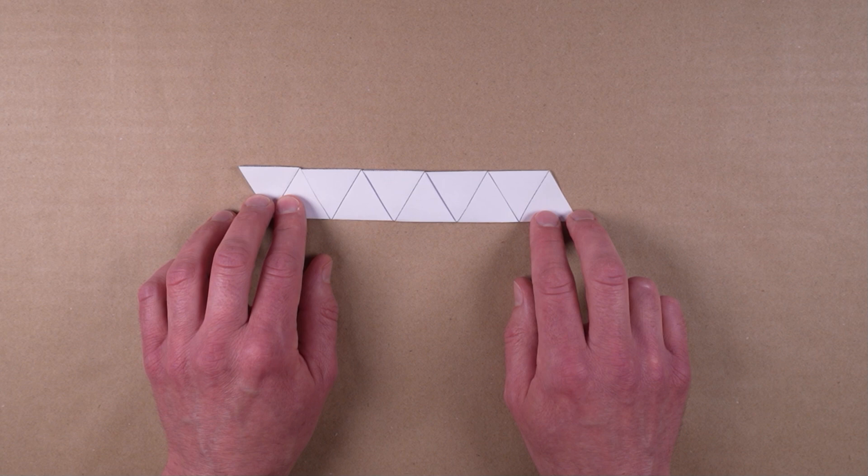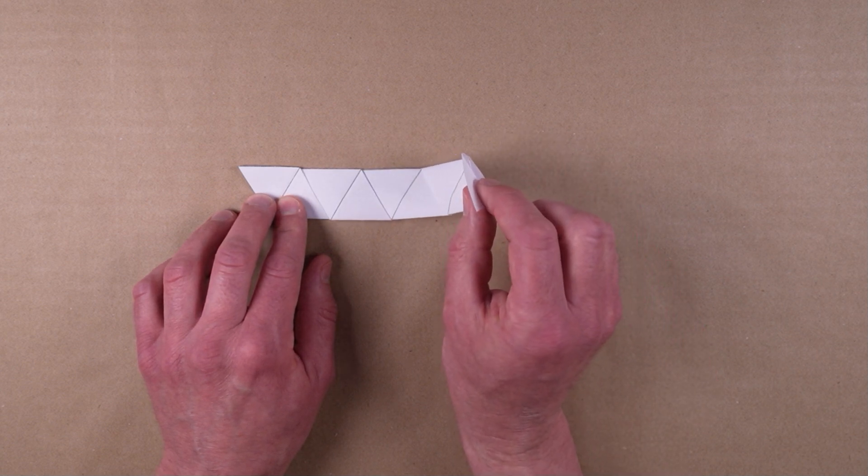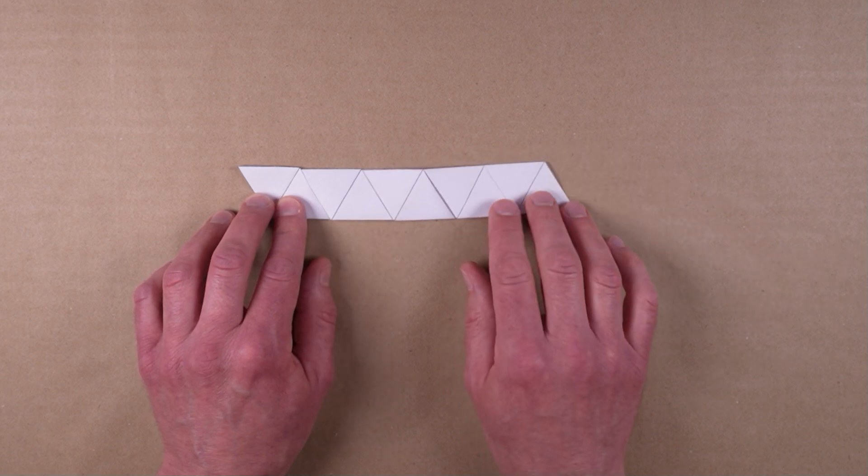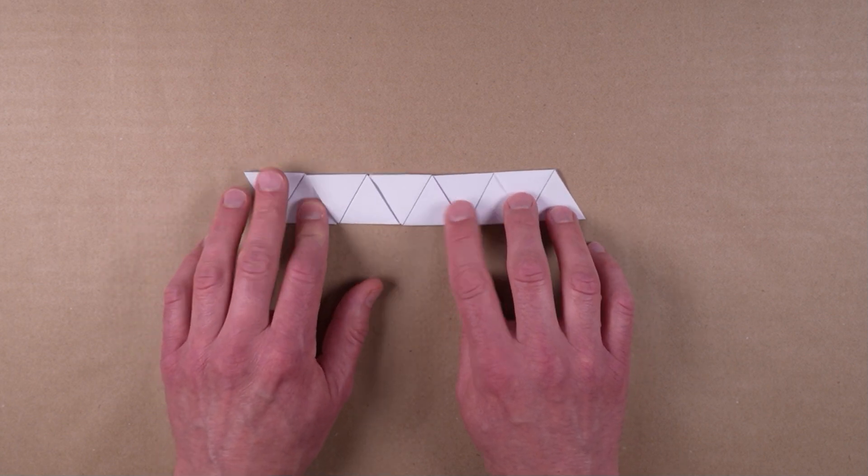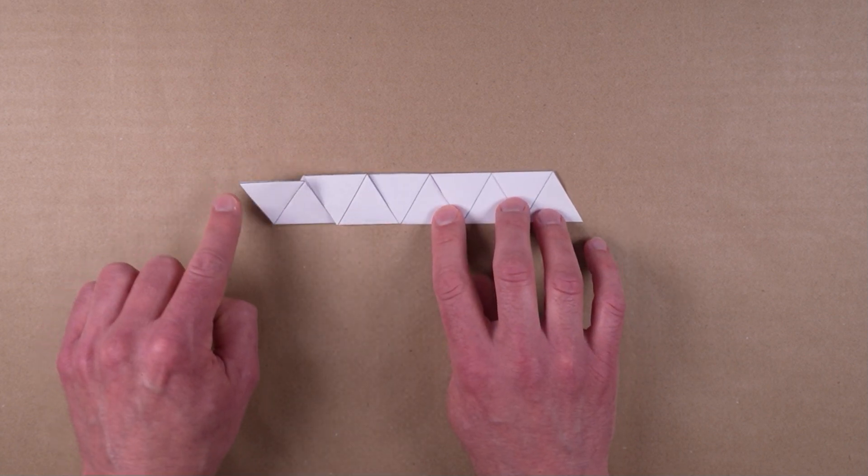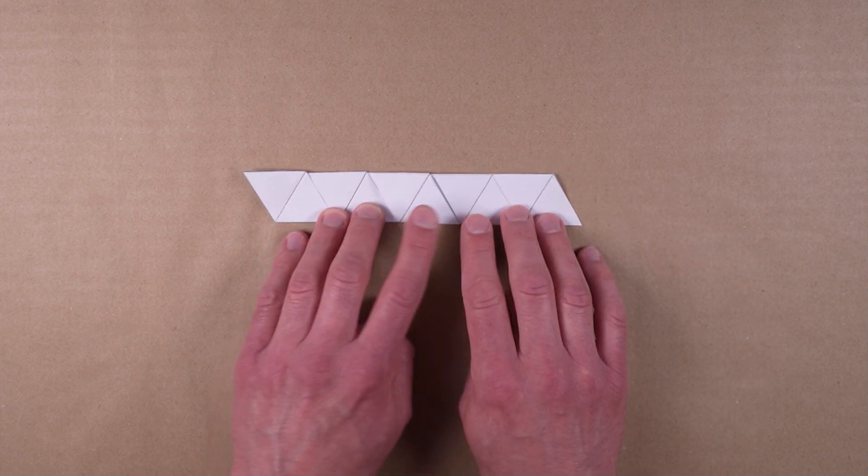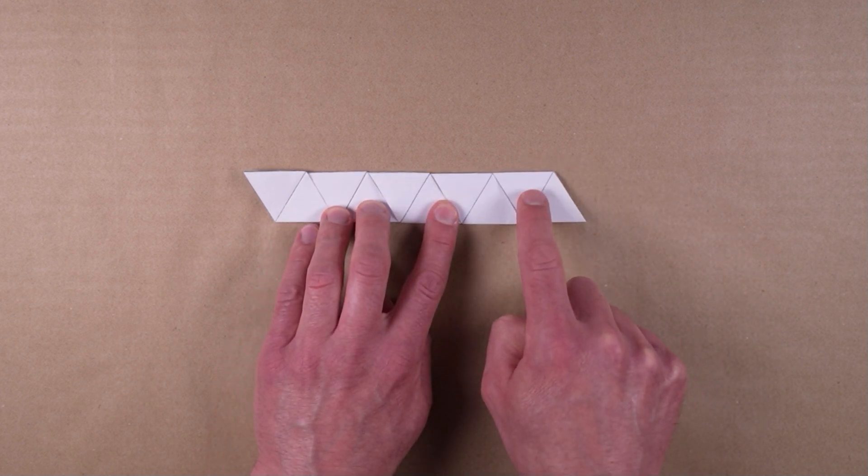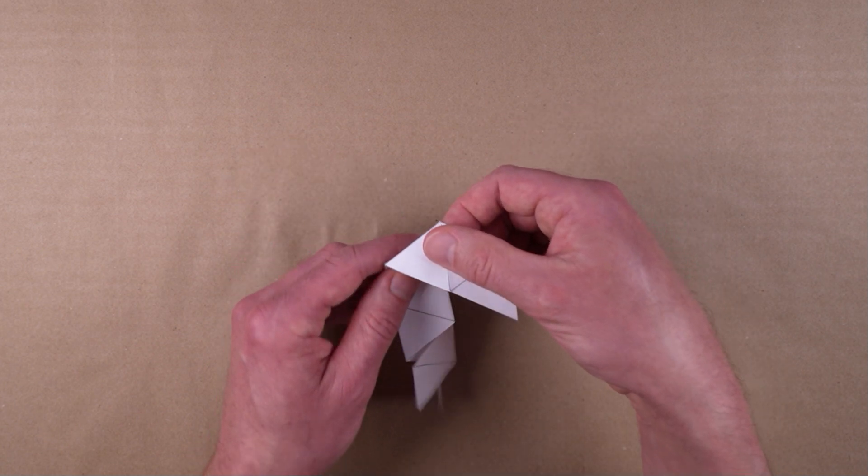Position the strip in front of you like this such that the rightmost triangle is the one with only a single layer. The leftmost triangle should have two layers. The left and right edges of the strip should slant downward to the right. Count three triangles from the right and fold the remainder of the layered strip back 180 degrees creating a candy cane shape.